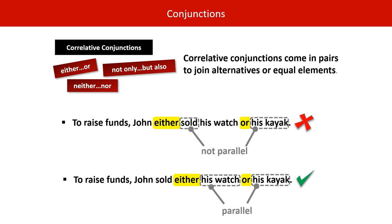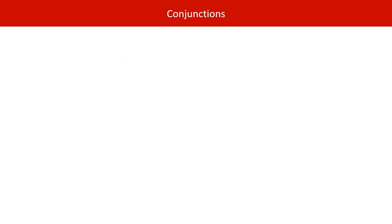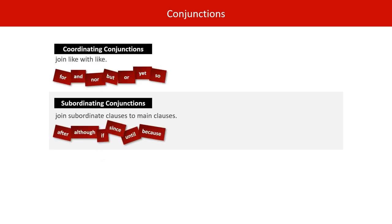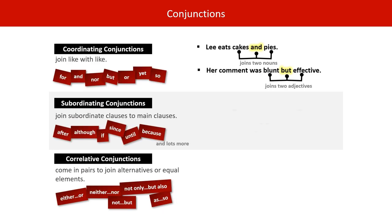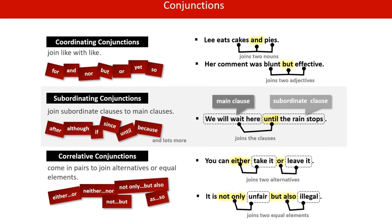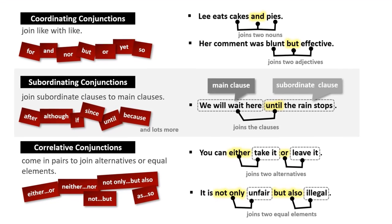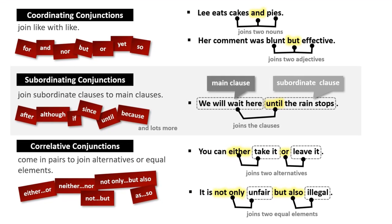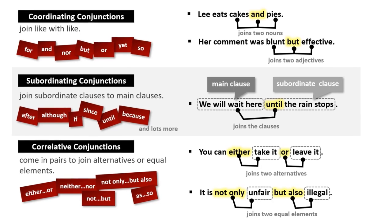That is everything about correlative conjunctions, ending this video on conjunctions. Here is a summary slide covering coordinating conjunctions, subordinating conjunctions, and correlative conjunctions. You can pause the video here to remind yourself of the content we've covered.